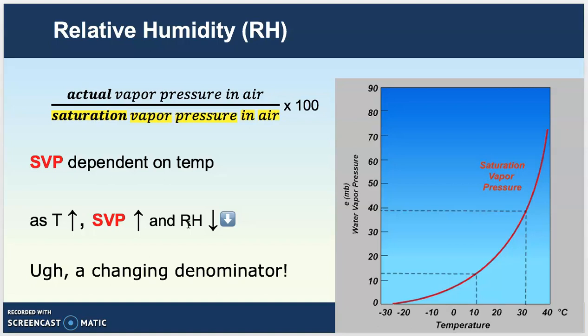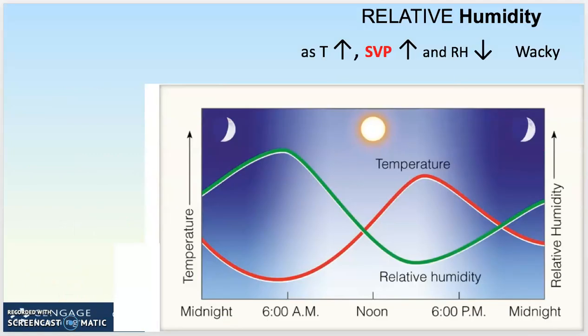This denominator changes throughout the 24-hour period. Temperature goes up during the day and down at night, so relative humidity changes quite a bit as a result of this saturation vapor pressure. As temperature goes up during the day, relative humidity goes down. You might say that feels crazy — it feels most humid at 3 o'clock in the afternoon. But that's because you're feeling a combination of high temperatures and humidity, giving you a real-feel temperature. The lowest relative humidity by calculation is at the hottest time of the day.